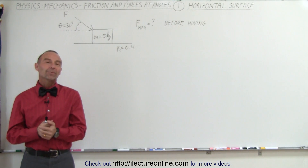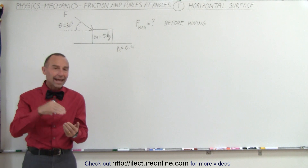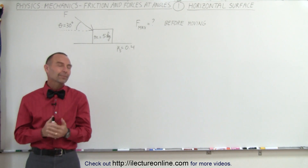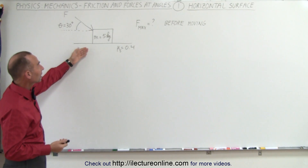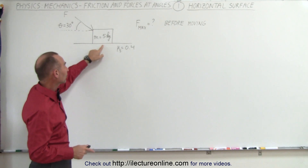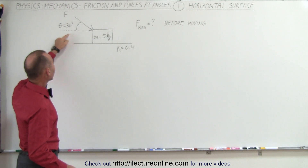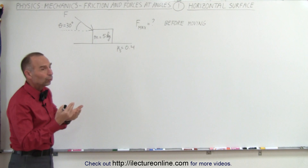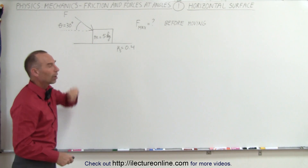Welcome to Electrion Line. Based upon some questions that I received from viewers regarding forces acting at an angle on objects, either on a horizontal surface or on inclined planes. The first example is we have an object on a horizontal surface. There's a coefficient of static friction between the object and the surface of 0.4. There's a force acting on it at an angle of 30 degrees relative to the horizontal. The question is: what is the maximum force we can apply to the block before the block starts moving?